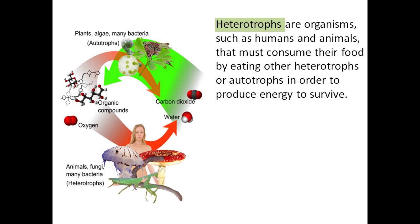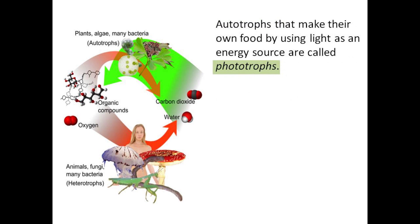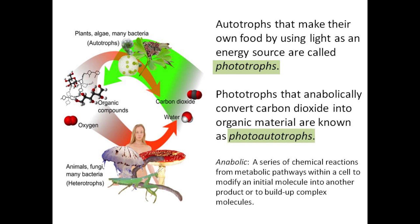Heterotrophs are organisms, such as humans and animals, that must consume their food by eating other heterotrophs or autotrophs in order to produce energy to survive. Autotrophs that make their own food by using light as an energy source are called phototrophs. Phototrophs that anabolically convert carbon dioxide into organic material are known as photo-autotrophs.